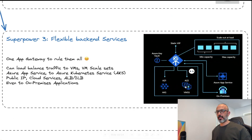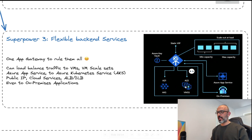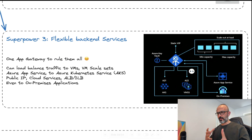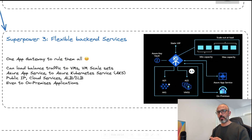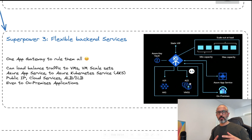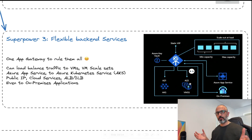The next superpower is what I call a flexible backend service — one Application Gateway to rule them all. The Application Gateway not only load balances and protects traffic, but also integrates with virtual machines, virtual machine scale sets, Azure Kubernetes Service, Azure App Service, and even on-premises servers. So if you have web apps built on different types of technologies, Azure Application Gateway provides one place to load balance and apply all its intelligence.